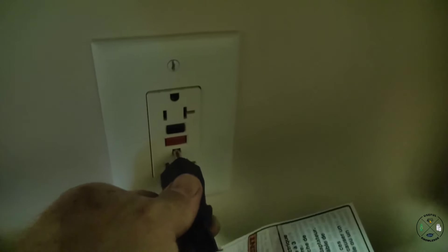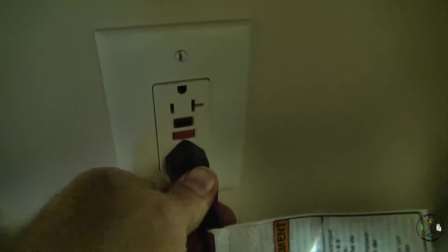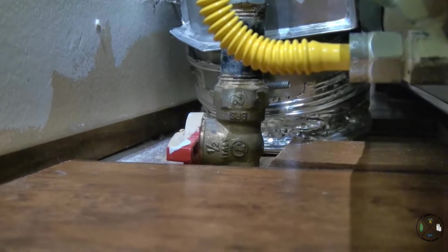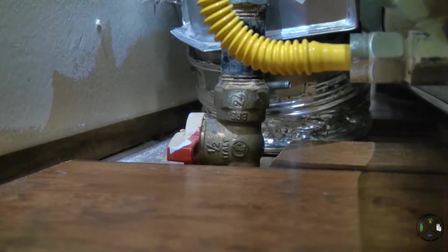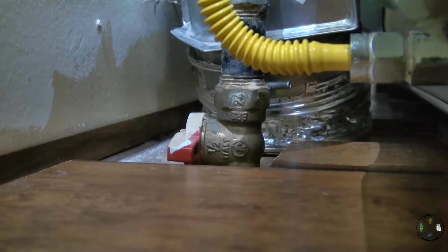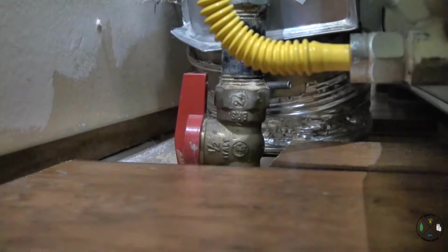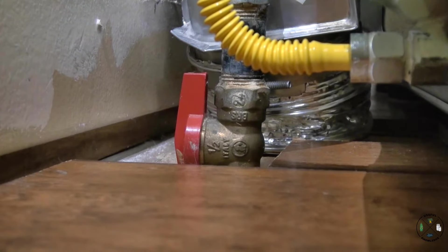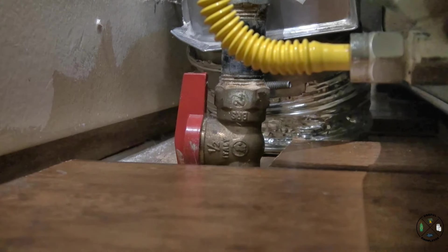Okay next we're going to plug the dryer in. Okay the final step is to turn on the gas supply. Now the lever right now is off and you're going to know it's on when you have the lever in line with your gas supply pipe. I'm going to turn it on now. The gas is on, it's plugged in, we're going to give it a try.